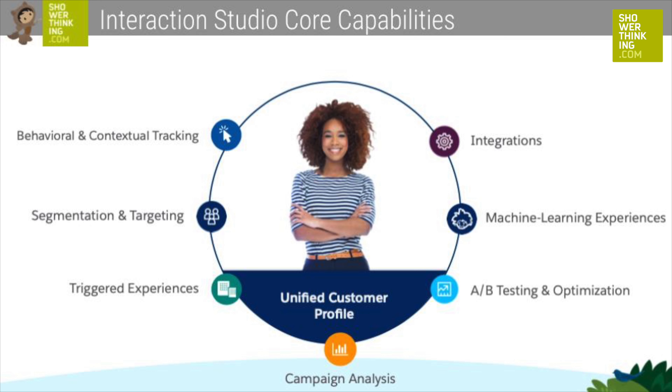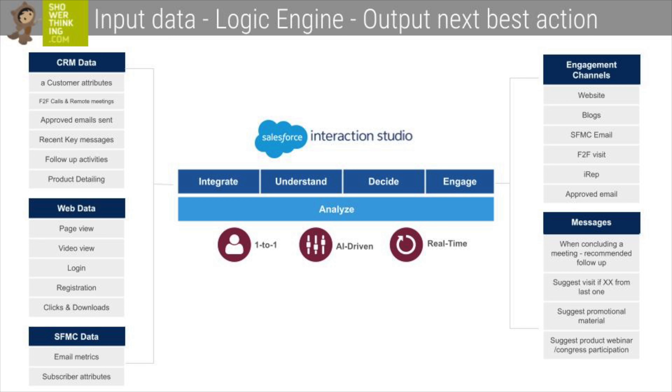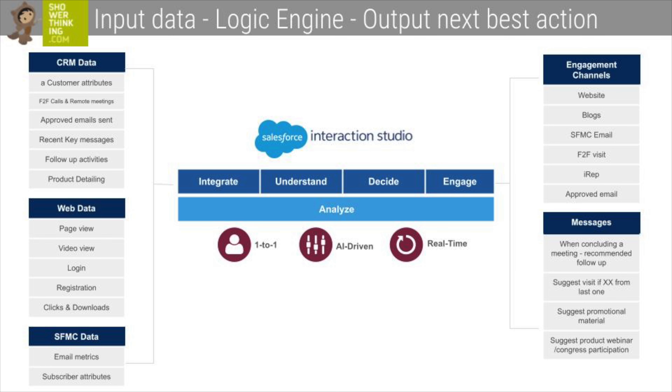The core capabilities of Interaction Studio are what make it such a valuable tool. With the implementation of Interaction Studio, you can provide one-to-one recommendations and personalized experiences powered by machine learning. This allows you to create a unified customer profile and segment your audiences in a way that makes sense and allows you to target specific groups of customers. Here you can see which data is necessary as input data, what Interaction Studio does with that data, and the output data — which is the final product in the format of next-best action.